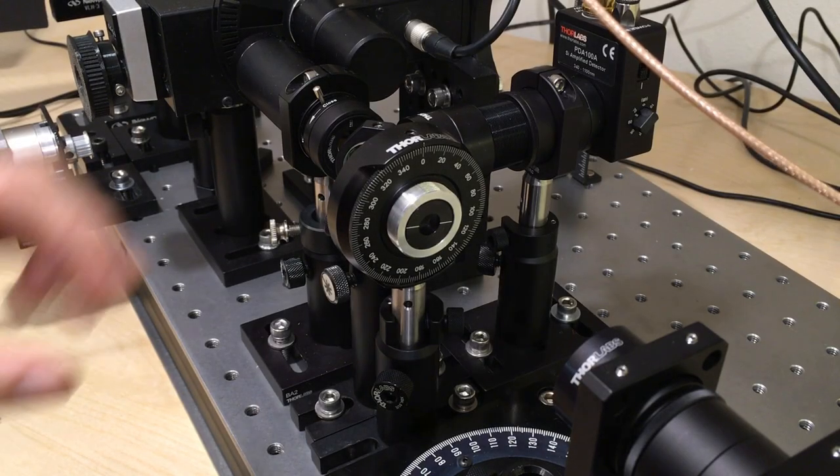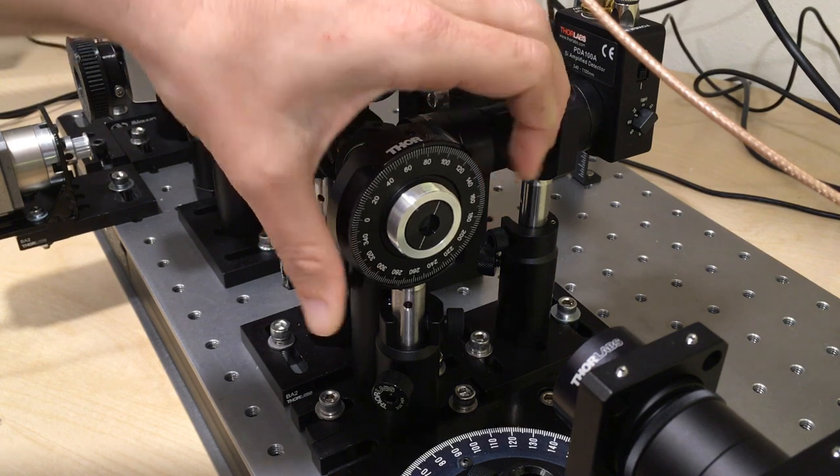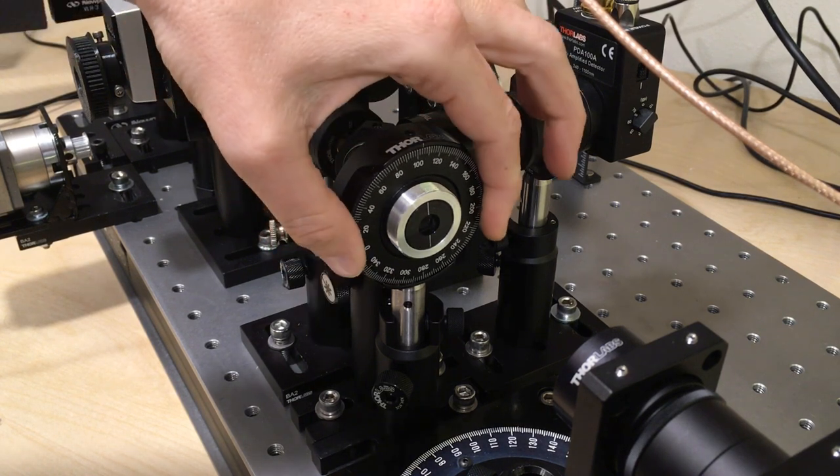The polarization state of the test mirror is selected with a Glan-Thompson polarizer mounted on a rotation stage that defines the orientation of the transmitted electric vector.